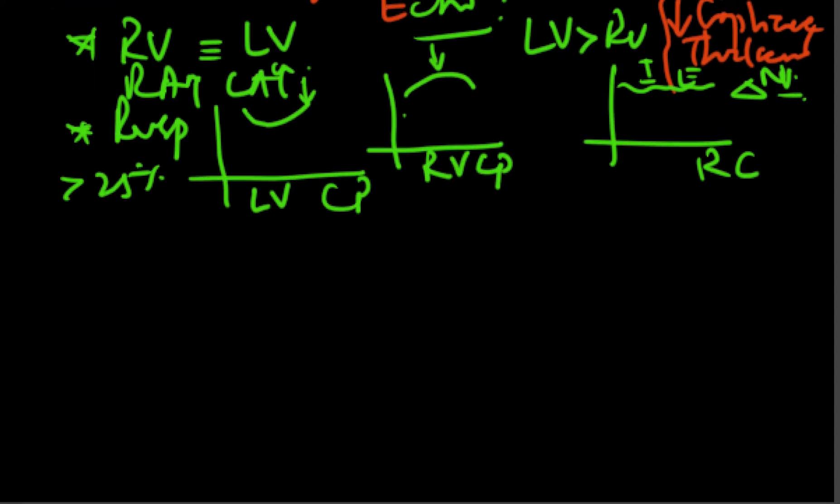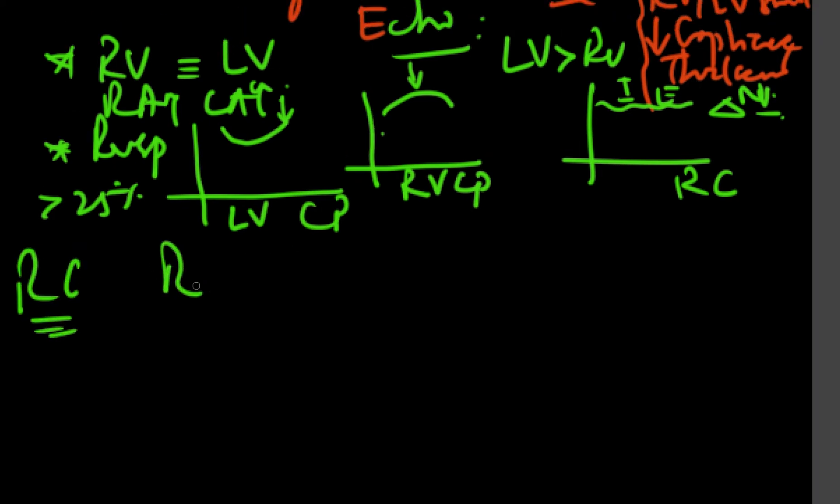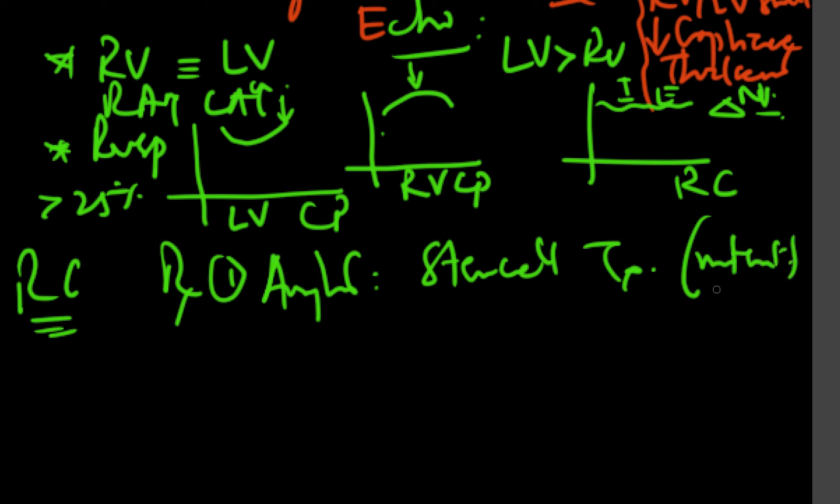The treatment will obviously depend on the pathology or the etiology of the restrictive cardiomyopathy. For amyloids, specifically, the transthyretin variety could be treated with a stem cell transplant. So stem cell transplant is very helpful, especially in the mutant variety or the familial variety. Whereas the primary and the secondary, the heart-lung transplantation is the way to go.